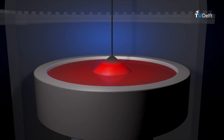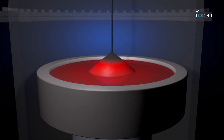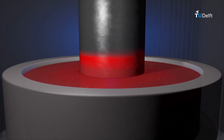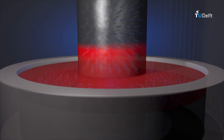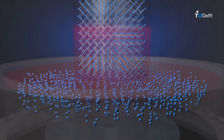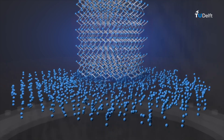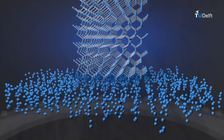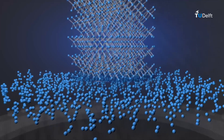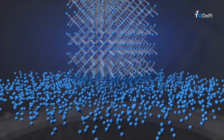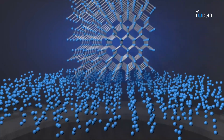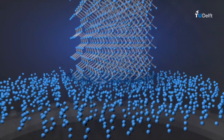A seed crystal mounted on a rotating shaft is dipped into the molten silicon. The orientation of this seed crystal is well defined — either a 1-0-0 or a 1-1-1 orientation. The melt solidifies at the seed crystal and adopts its orientation. The crystal is rotated and pulled upwards, allowing the formation of a large single crystal cylindrical column from the melt. This big single crystalline silicon block is called an ingot.